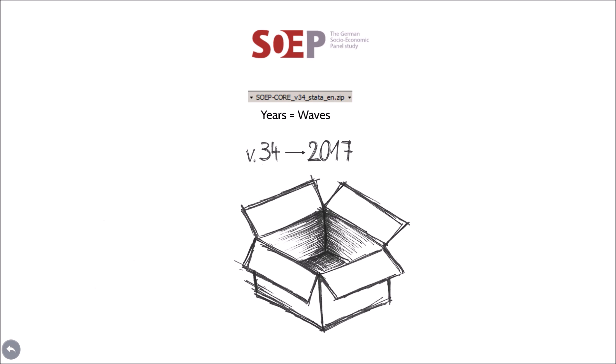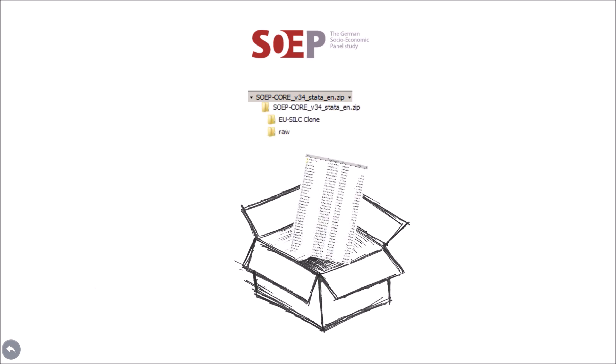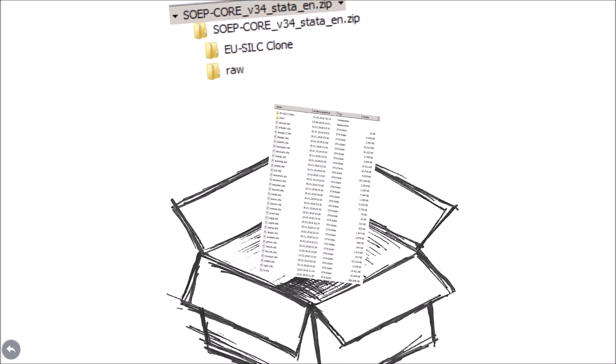The unpacked zip file contains two folders and several datasets. Don't worry about the two folders for now. You can learn about the data in the EU-SILK and the raw folder in another tutorial. The datasets you see in the zip file are the SAP data.